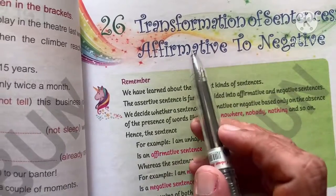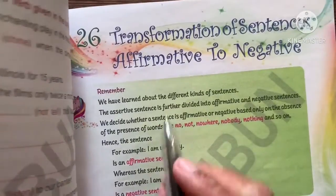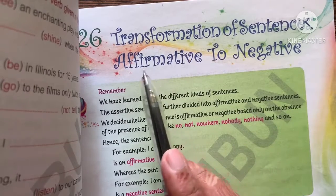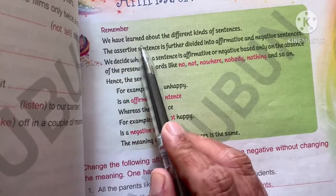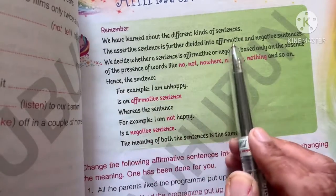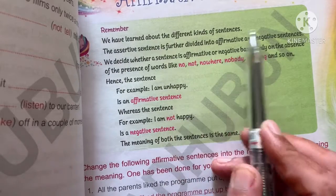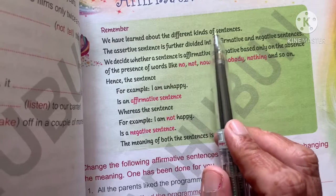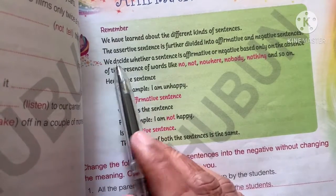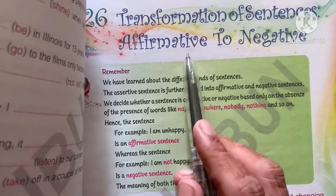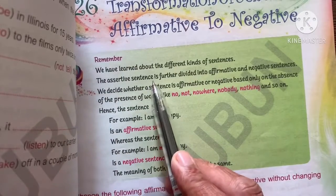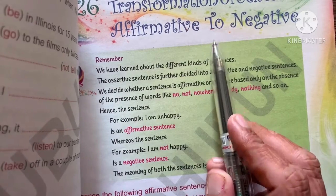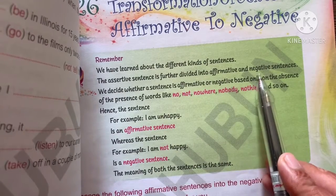I hope all of you have understood about sentences. Now you have to transform the sentence from affirmative to negative. We have learned about the different kinds of sentences — assertive, interrogative, exclamatory, and imperative. Now we need to see which are assertive and affirmative sentences. The assertive sentence is further divided into affirmative and negative sentences.